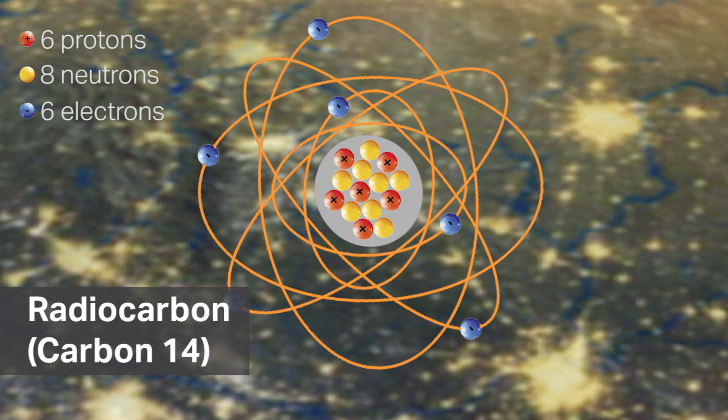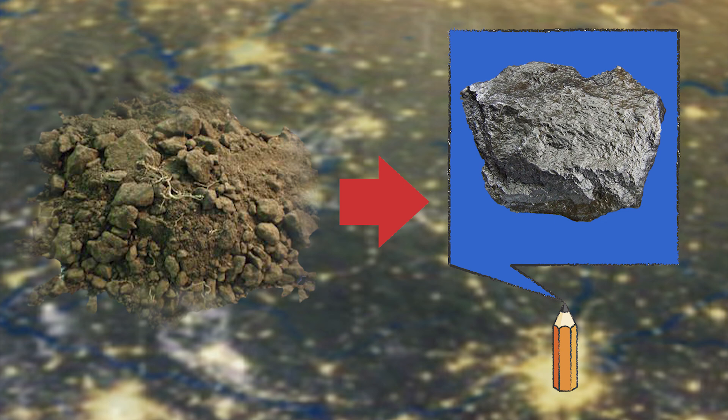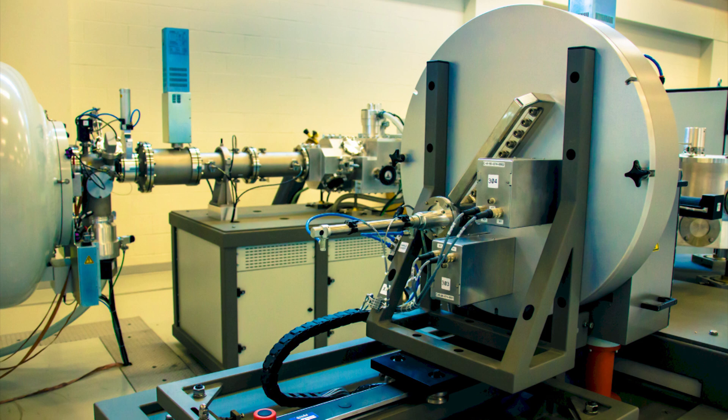What we do is we take any sample and convert it to graphite. There's a little aluminum button with the graphite in the center of it. We can mount up to 200 of these graphite targets into a cartridge type we call an ion source, because what we're going to do is take the atoms of carbon in that graphite and convert them to ions. We're going to ionize them.